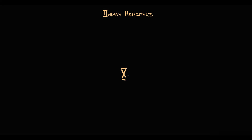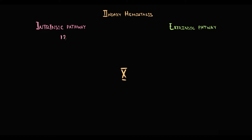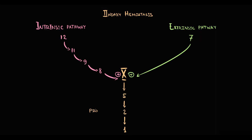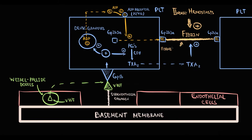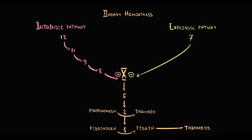Secondary hemostasis is provided by coagulation factors that form the coagulation cascade. The central factor of the coagulation cascade is factor 10. The goal of both intrinsic and extrinsic coagulation pathways is to activate factor 10. The intrinsic pathway consists of factors 12 to 8, and the extrinsic pathway consists of just factor 7. Activation of factor 10 results in activation of factors 5, 2, and 1. Factor 2 is called prothrombin, which with activation becomes thrombin. Factor 1 is called fibrinogen, which with activation becomes fibrin, and exactly fibrin makes from the platelet plaque a formidable thrombus. To assess the extrinsic pathway, we use prothrombin time and international normalized ratio. For assessment of the intrinsic pathway, we use partial thromboplastin time.